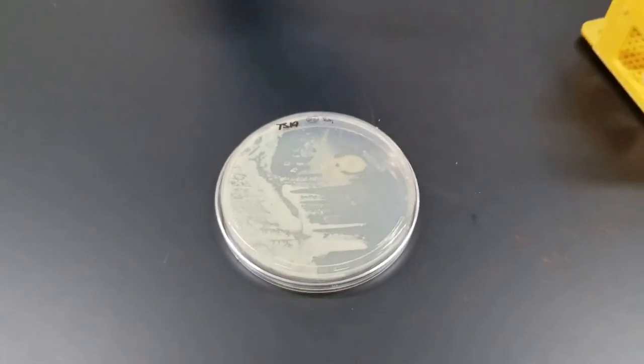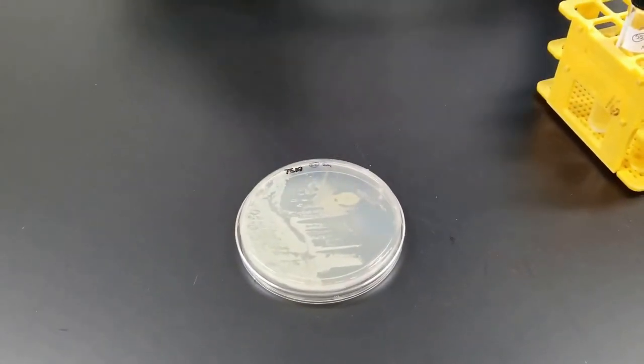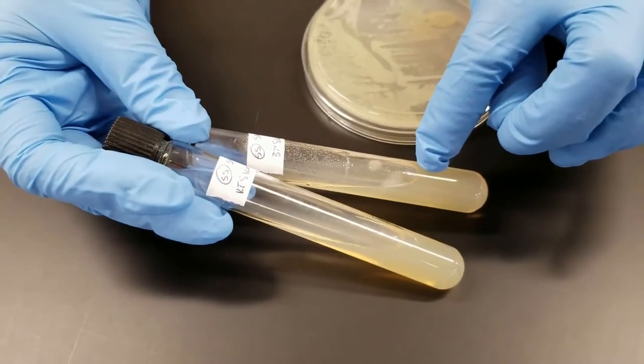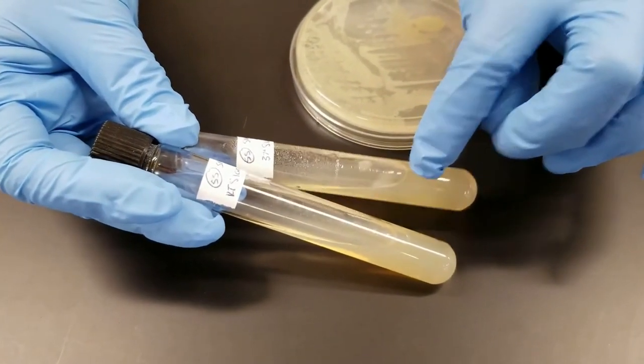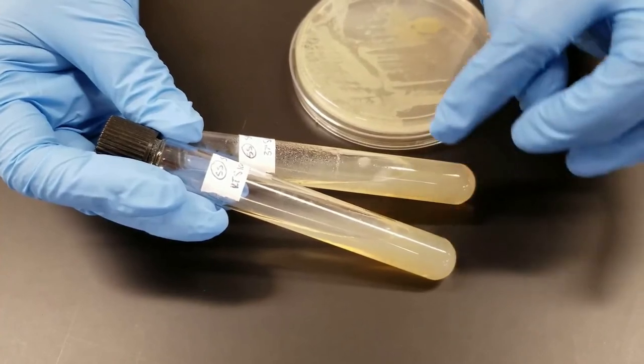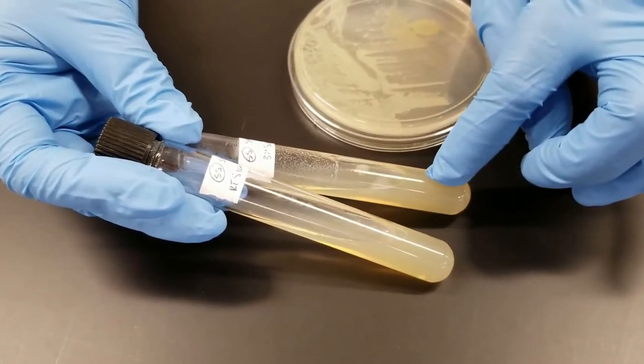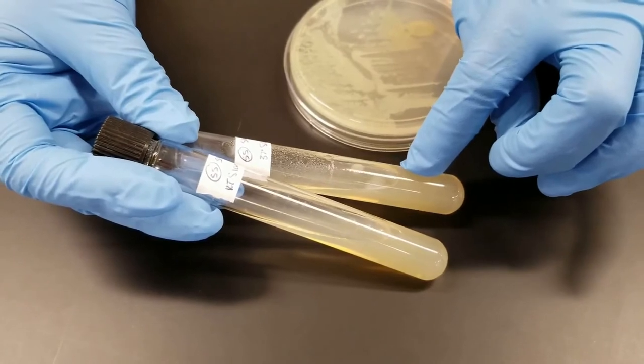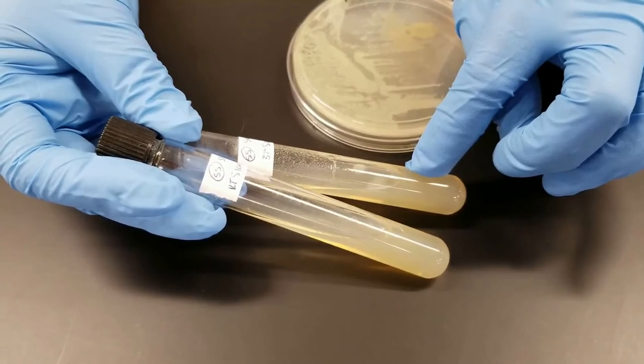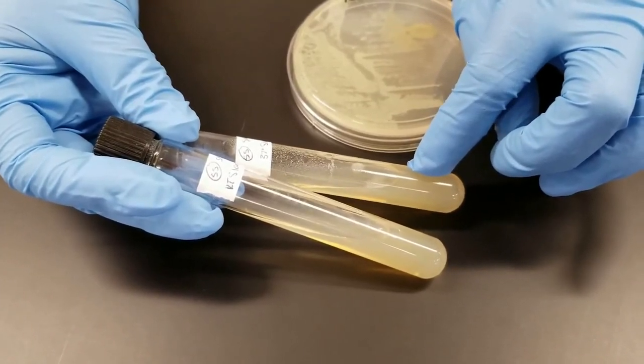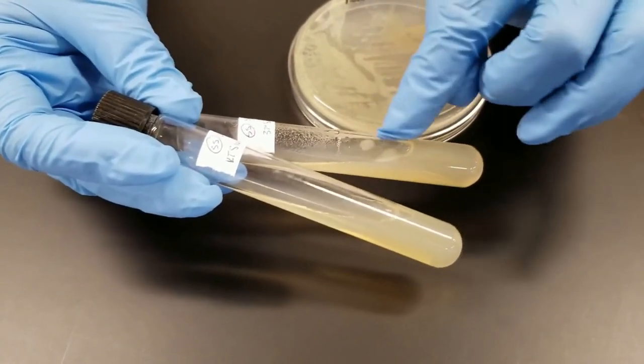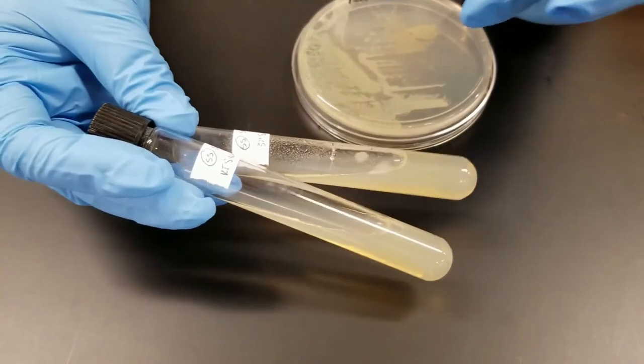We also grew it on slants. And if you compare, this top slant was grown at 37 degrees Celsius. The bottom slant was grown at room temperature, which is about 21 degrees C. You can tell that there's better growth, more heavy growth at the 37. So that would tell you that 37 is closer to its growth temperature optimum. It will grow at room temperature. It's just it will grow better at 37. Once again, we have nice heavy growth on the slant at 37.